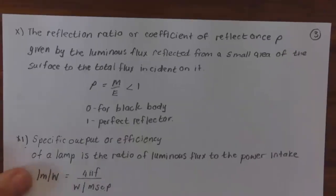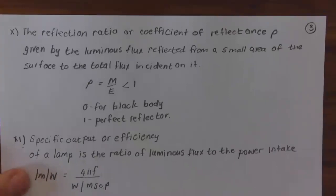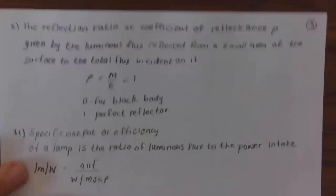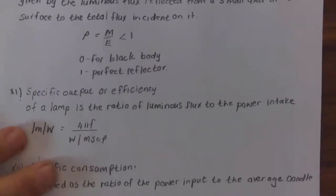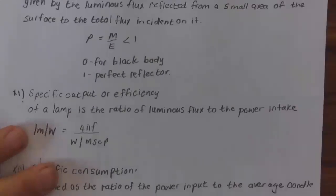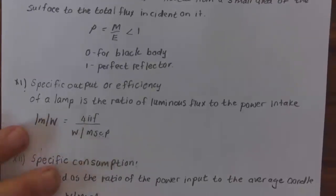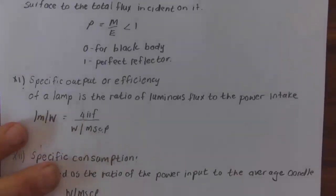The reflection ratio or coefficient of reflectance ρ is given by the luminous flux reflected from a small area of the source to the total flux incident on it, so ρ = M/E, and that is always less than one. It is zero for a black body and one for a perfect reflector.